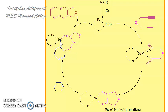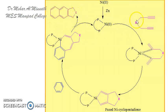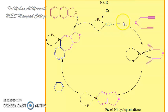Later on, reductive elimination occurs, the nickel catalyst is released, and you get the naphthalene derivative. Now if you change the X group to CH₂ you get a fused six-membered ring, or if you use X as CH₂ you get a five-membered ring. So you can vary the X group to get different types of naphthalene derivatives.